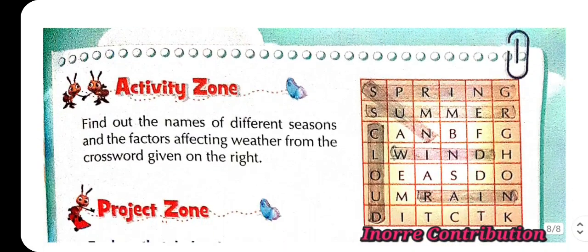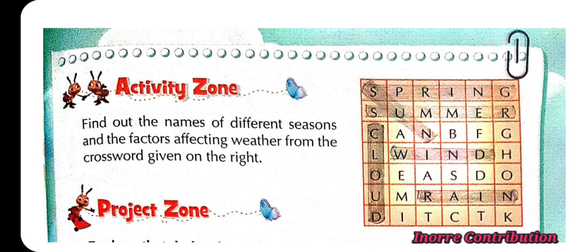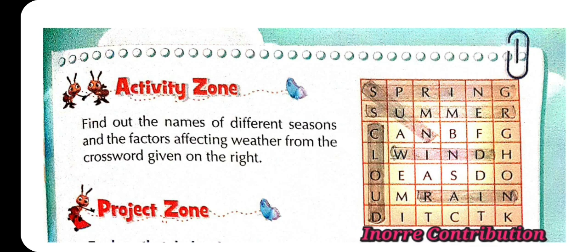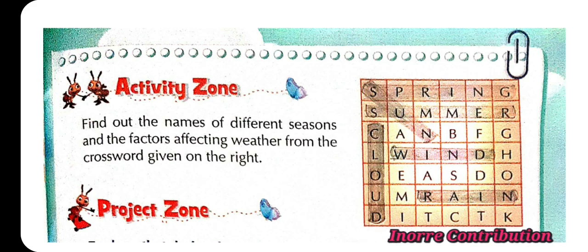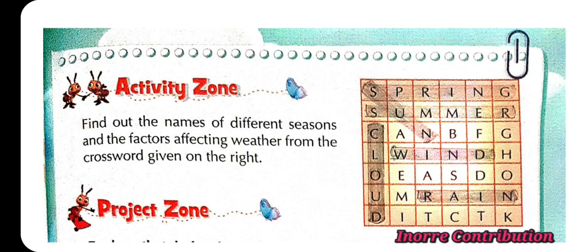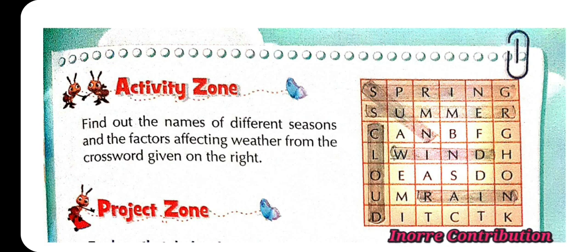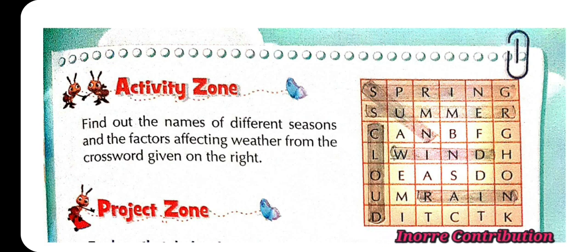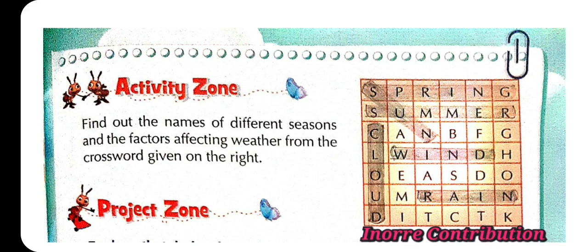Activity zone. Find out the names of different seasons and the factors affecting weather from the crossword given on the right. Answers: Spring, sun, wind, rain, cloud.